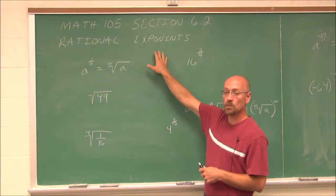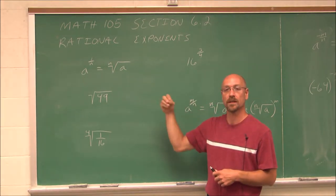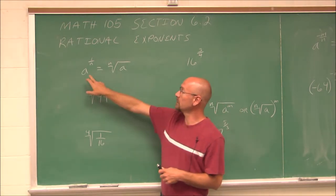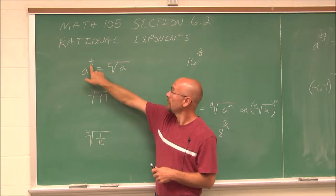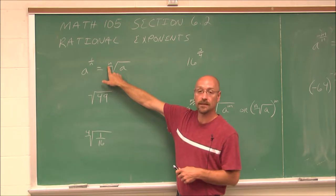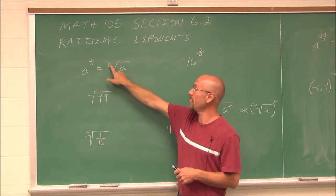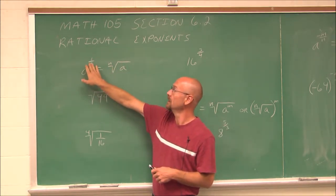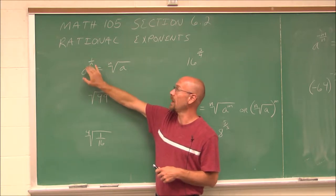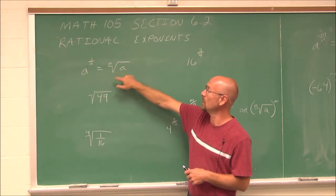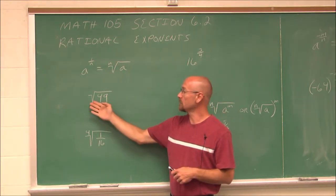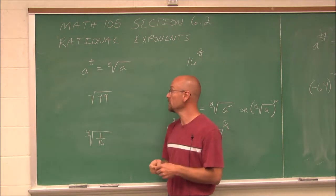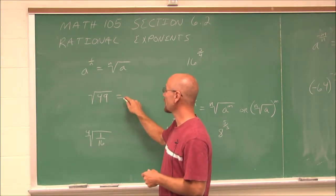When we deal with rational exponents, it just means exponents that are fractions. As an example, if we have some base to the power of 1 over n, the denominator of that power fraction is the index of the radical. So we'd have the nth root of a, which means the same thing as a to the 1/n power. So if we want to convert a radical to an exponent, we can simply write it as a fractional exponent.